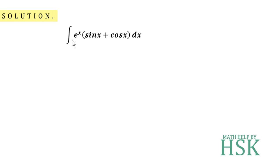We see that we have been given two terms in the integral: one is e to the power of x, and second is in the bracket sin x plus cos x.